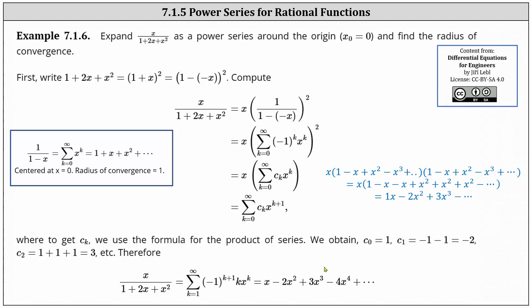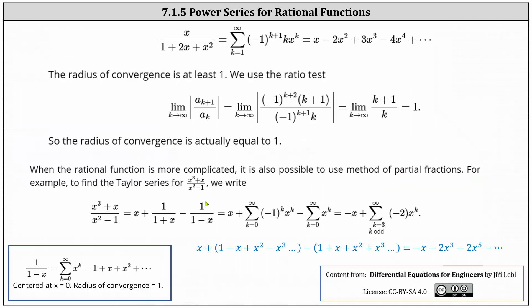Now let's determine the radius of convergence. Because we used the geometric power series, we know the radius of convergence is at least 1, but we use the ratio test to verify. To apply the ratio test, we determine the limit as k approaches infinity of the absolute value of a sub k plus 1 divided by a sub k. Simplifying, we have the limit as k approaches infinity of k plus 1 divided by k, which is equal to 1. Recalling the limit is equal to 1, the test is inconclusive, and therefore the radius of convergence is actually equal to 1.